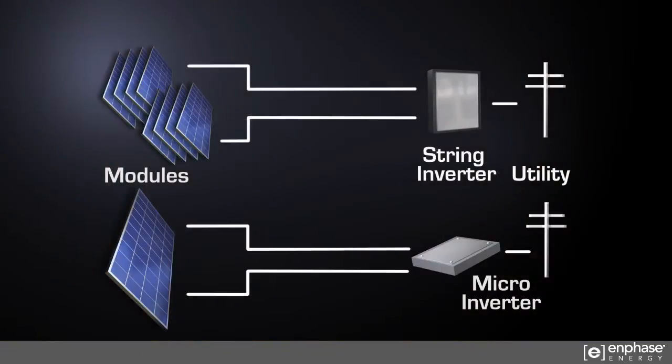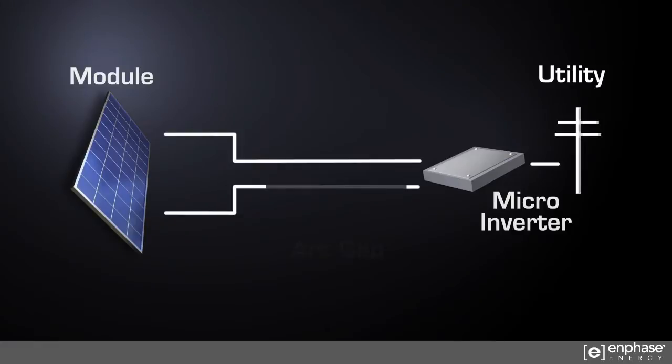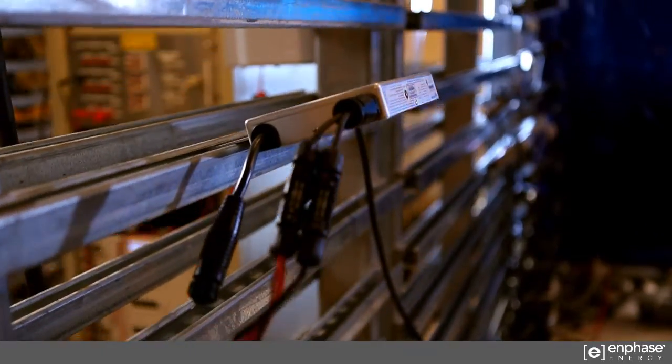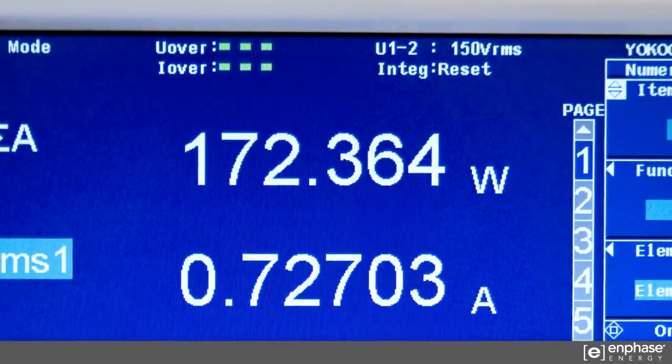The second case illustrates a microinverter scenario. The microinverter is exporting 170 watts to the grid.